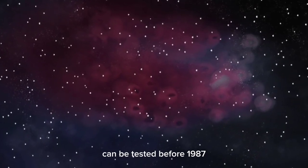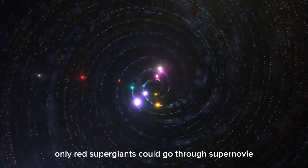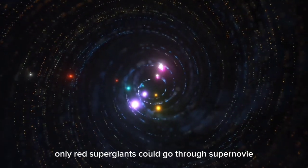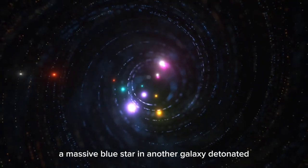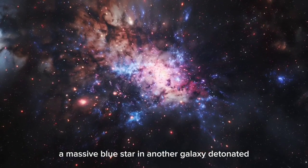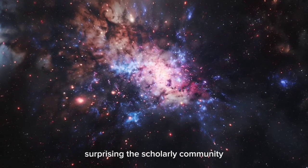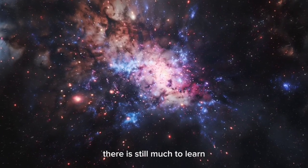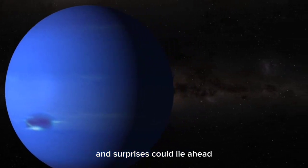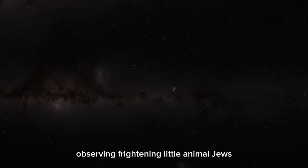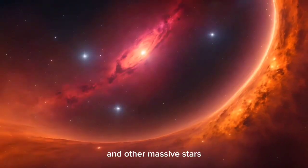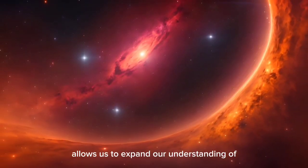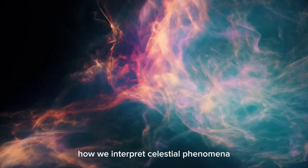History has shown us that our assumptions in space science can be tested. Before 1987, cosmologists believed only red supergiants could go through supernovae. Yet that year, a massive blue star in another galaxy detonated, surprising the scholarly community. There is still much to learn, and surprises could lie ahead. Observing Betelgeuse and other massive stars allows us to expand our understanding of how we interpret celestial phenomena.